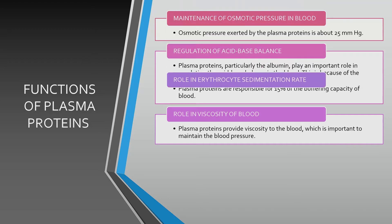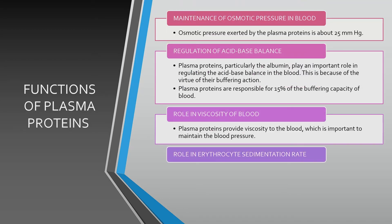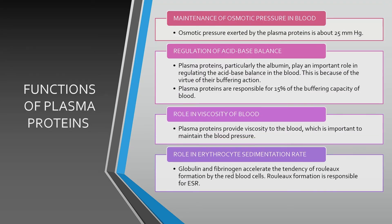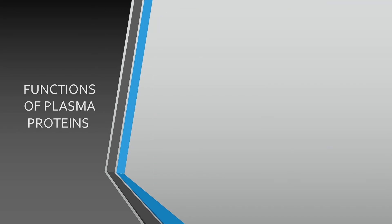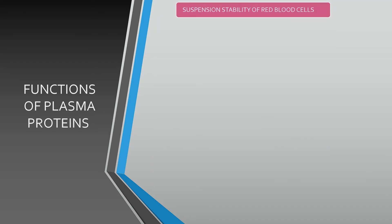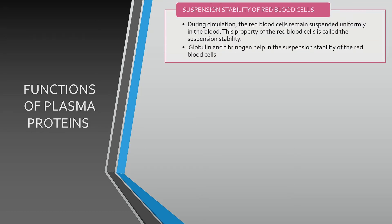Globulin and fibrinogen accelerate the tendency of rouleaux formation by the red blood cells. Rouleaux formation is responsible for the erythrocyte sedimentation rate. Globulin and fibrinogen also help in the suspension stability of the red blood cells. During circulation, the red blood cells remain suspended uniformly in the blood, and this property is called suspension stability.